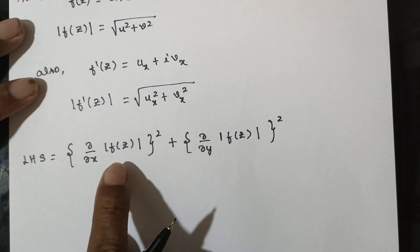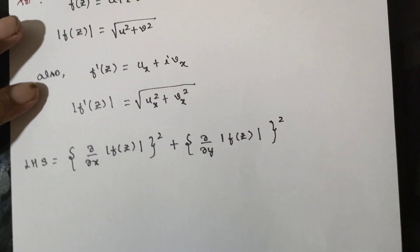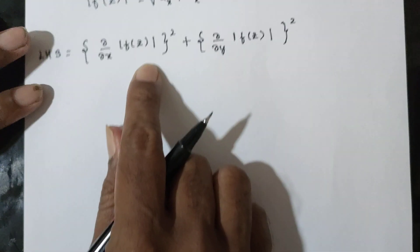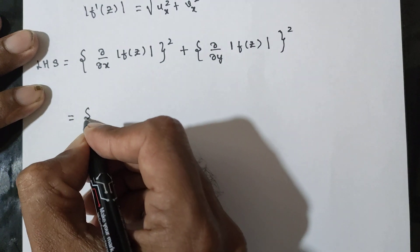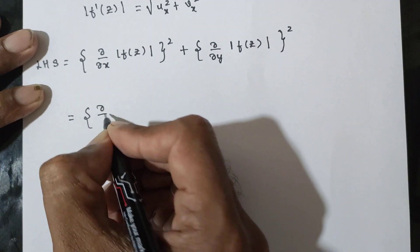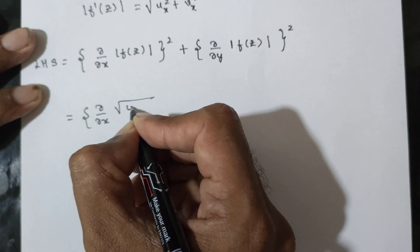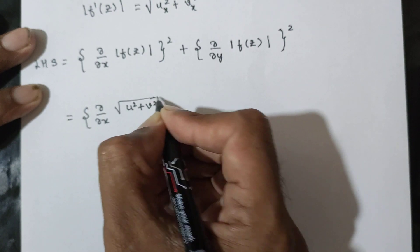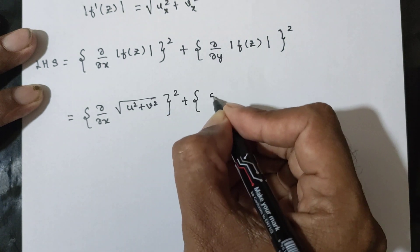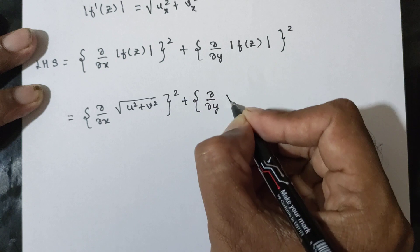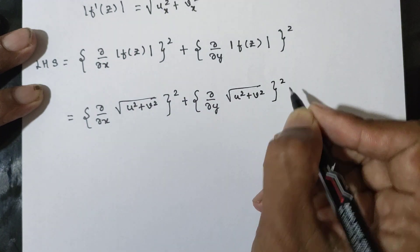Here, the partial derivative with respect to x of |f(z)| is the root of u square plus v square. Similarly, the partial derivative with respect to y of |f(z)| is the root of u square plus v square whole square.